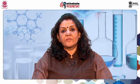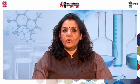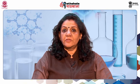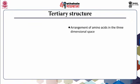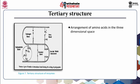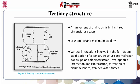Now we will go on to discuss the tertiary structure of the enzyme. This is the third level after the primary and the secondary. The arrangement of amino acids in three-dimensional space defines the tertiary structure of the enzyme. The protein molecules arrange themselves three-dimensionally so as to achieve low energy but at the same time maximum stability. The various interactions involved in the formation or stabilization of the tertiary structure are hydrogen bonds, polar-polar interactions, hydrophobic interactions, ionic interactions, and formation of disulfide bonds or van der Waals forces.